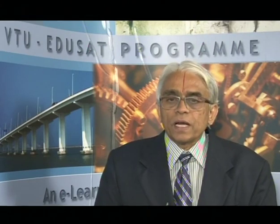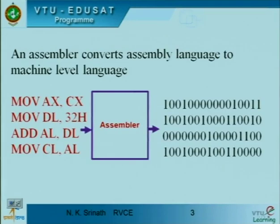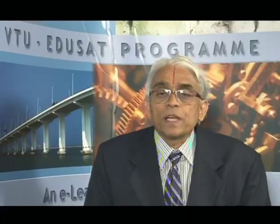Assembly language consists of a set of instructions that tells the computer what to do. It is a direction given so that the assembler would perform the required conversion of the given code for the machine to understand. Assembly language programming is a set of instructions, and this particular instruction is converted to machine language. An assembler converts assembly language to machine language one-to-one, as indicated in this block diagram.